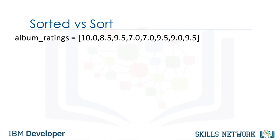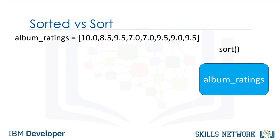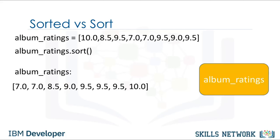If we use the method sort, the list album_ratings will change and no new list will be created. When we apply the method sort to the list, the list album_ratings changes. Unlike the previous case, we see that the list has changed and no new list is created. Now that we've gone over how to use functions in Python, let's see how to build our own functions.